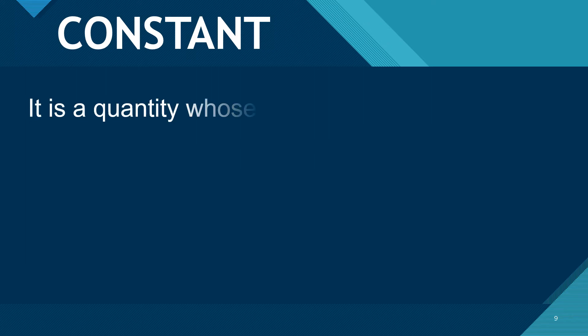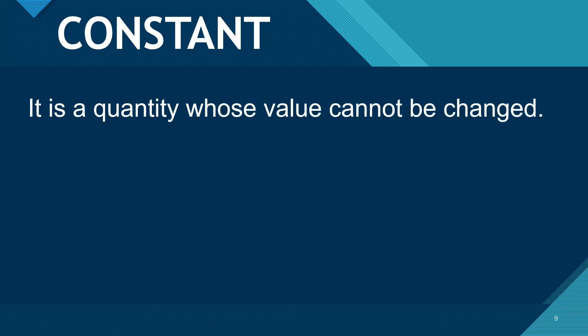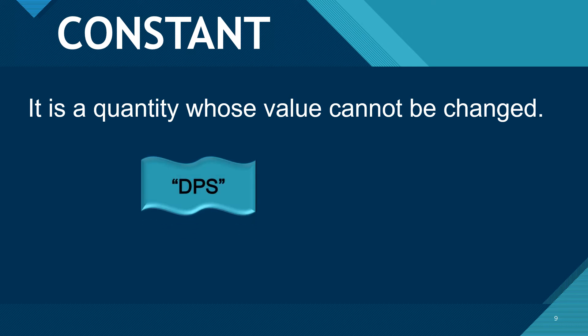Now that you have learned variables, it's time for constants. A constant is a quantity whose value cannot be changed. Constants are stored in variables — for example, any text written in double quotes or any number.